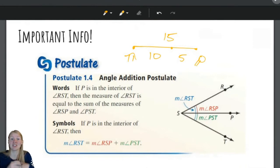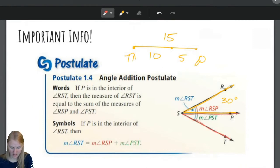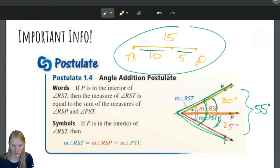The angle addition postulate is the exact same, just with angles. So if I know what this angle is, if I know that this angle is 30 degrees, and I know that this angle is 25 degrees, then if I add these together, this entire angle, if I add these together, the entire angle has to be 30 plus 25, which is 55. So this little chunk plus the other chunk makes up the whole chunk, just like our segment addition postulate.